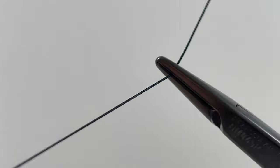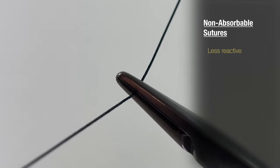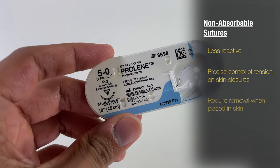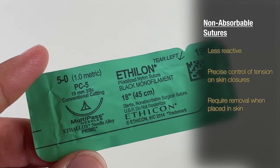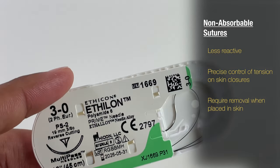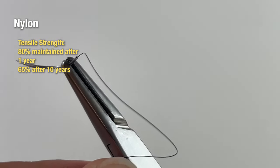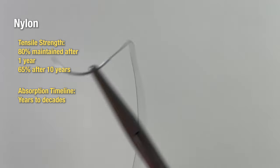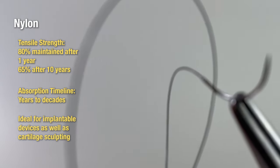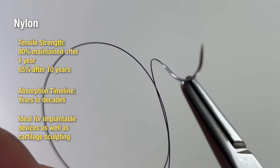Non-absorbable sutures are great for cutaneous closures when you want to precisely control the timing of tension removal from the wound closure, or when placing an absorbable suture is impractical — such as in highly damaged tissues like previous radiation sites. Sometimes non-absorbable sutures are used within the body as permanent sutures. Nylon, for example, maintains 65% of its tensile strength after 10 years. Polyester-fibrid sutures such as Ethibond or Mersilene, with indefinite permanence, are ideal for implanted devices or procedures requiring the sculpting of cartilage such as otoplasties or rhinoplasties.